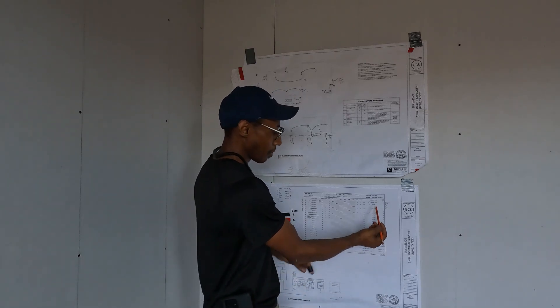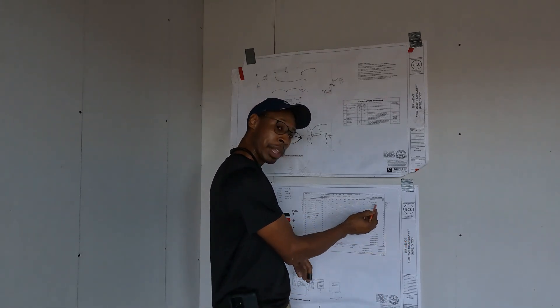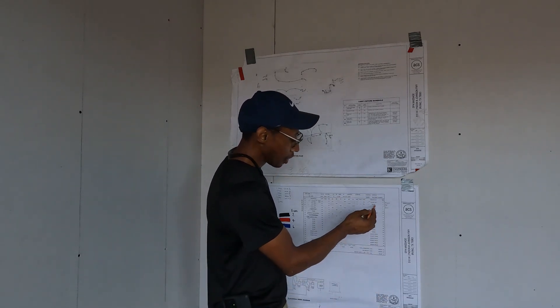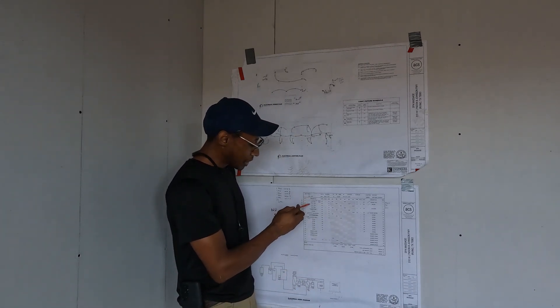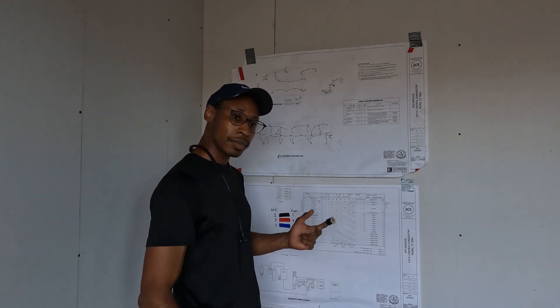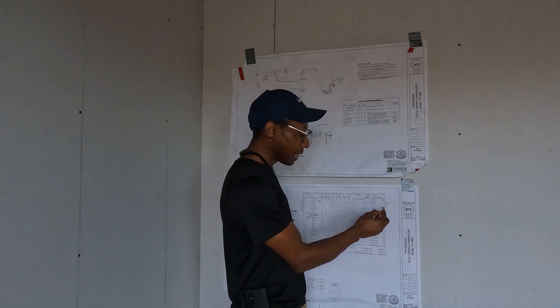If you go over to the other row of breakers, that's your even side. The first breaker at the top is circuit two, the next is circuit four, then circuit six — so two, four, six. On the odd side you have one, three, five, seven, nine, eleven. On the even side you go two, four, six, eight, ten, twelve, fourteen, and so on.